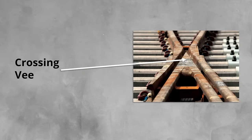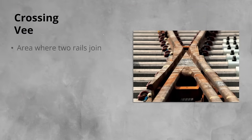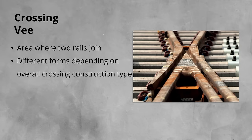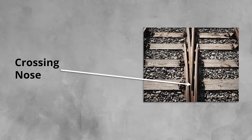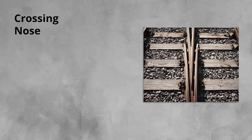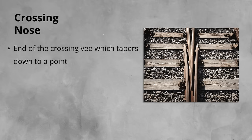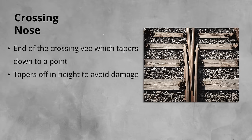The V is the area where the two rails that are crossing over each other join. This can take a few different forms depending on how the crossing is constructed, but we will cover this later. Next up is the crossing nose. This is the end of the V, where two rails taper down to a point. It also tapers off in height. This helps avoid damage as wheels transition over it. Wheels run off or onto the nose, depending on the direction of travel, as they go through the wheel transfer area.